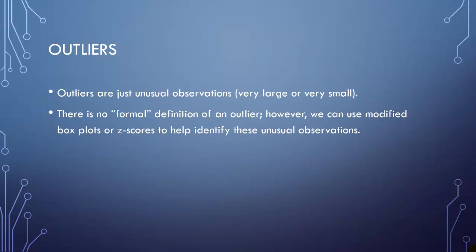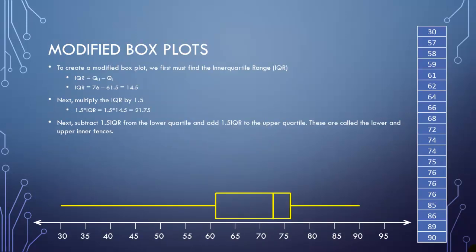We want to detect outliers, and we can use box plots to do this. We can also use z-scores. Outliers are just very unusual, very large, or very small data values. There's no formal definition for it, but we have methods we can use other than just visually saying that seems small or that seems large. So let's talk about modified box plots. To construct a modified box plot, the easiest way is to start off with just a regular box plot. From there, you're going to construct what's called the IQR, or interquartile range. The interquartile range is just the difference between your two quartiles.